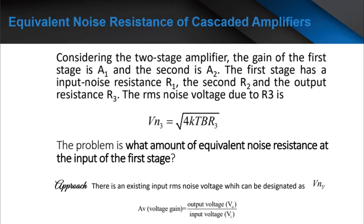The approach is: there is an existing input RMS noise voltage which can be designated as VN3'. In this lesson, it's also good to know how to get the voltage gain AV, where AV or voltage gain is equal to VO over VI, or output voltage over input voltage.